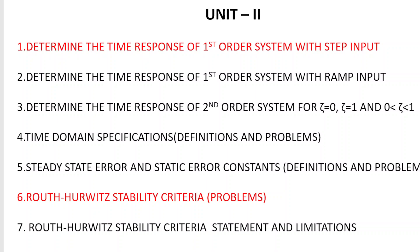There are three static error constants: proportional error constant, velocity error constant, and acceleration error constant. You should remember the three formulas for these constants. The sixth and very important topic is Routh-Hurwitz stability criteria — both problems and short answers covering the Routh-Hurwitz criteria statement and its limitations.